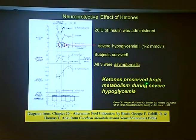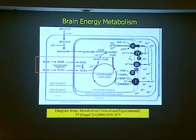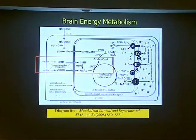Ketones can preserve brain metabolism during severe hypoglycemia. In normal brain energy metabolism, glucose is shuttled into brain cells primarily through glucose transporter 3. Oxidative stress impairs glucose transport, as does traumatic brain injury and Alzheimer's disease, which shows impaired glucose transport due to downregulation or inhibition of the GLUT3 transporter. Glucose through glycolysis generates pyruvate, and the pyruvate dehydrogenase complex is the rate-limiting step for deriving acetyl-CoA to drive the TCA or Krebs cycle to make reduced intermediates for the electron transport chain.